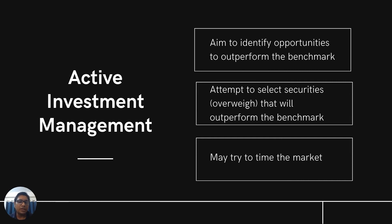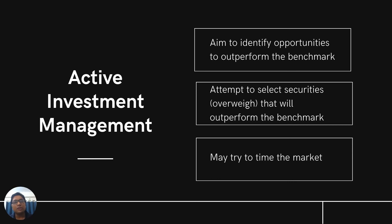Let's see a bit more detail on active investment management. Active investment managers aim to identify opportunities to outperform the benchmark. For example, if your benchmark is the DS-30, you try to outperform the benchmark return — if DS-30 is up by 10%, your portfolio tries to exceed that 10%. Whenever the benchmark is down by 10%, you form the portfolio so that your performance is down by less than 10%. In order to do that, you have to select securities that will outperform the benchmark. Whenever you find securities that you think will outperform, you overweight that asset. And if you find securities that are likely to underperform the benchmark, you underweight those securities.